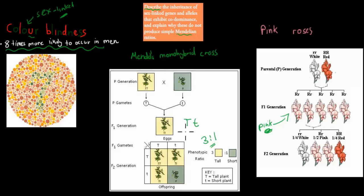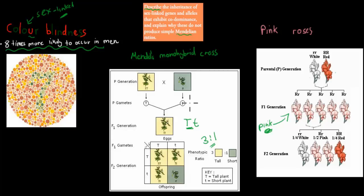The F1 generation being heterozygous tall, producing a 3-to-1 ratio when the F1 generation is crossed — why this doesn't happen when it comes to sex-linked genes and co-dominance.